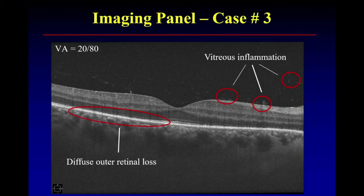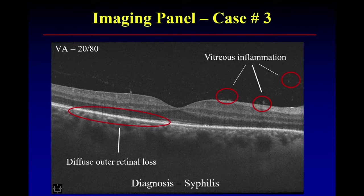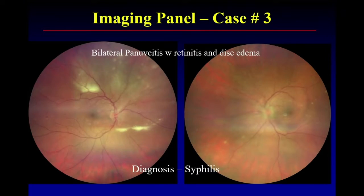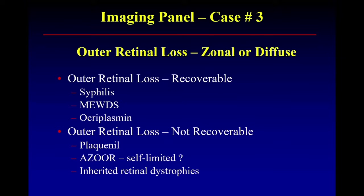I would love to see what the choriocapillaris looks like in this case. This is pathognomonic of syphilis — that combination of diffuse outer retinal loss and vitreous inflammation. Had you looked in the eye first rather than at the OCT, I think you would have seen the pan-uveitis. That combination of zonal or diffuse outer retinal loss can be seen in syphilis, MEWDS, birdshot chorioretinopathy, or acute zonal occult outer retinopathy. Remarkably, that's recoverable in all of these.